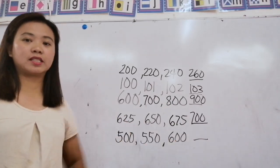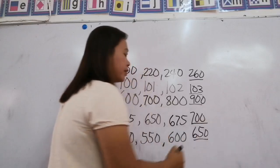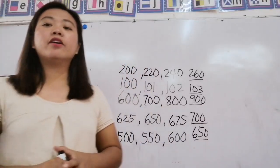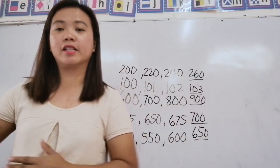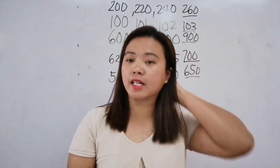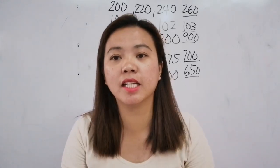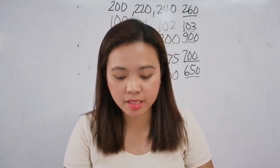Now 600, 700, 800, 900. What's the next number? 625, 650, 675. What's the next number? 600, what's the next number after 675? Now let's go to calendar. For the calendar, let's start first with the days of the week. Let's sing. Ready? Sing.